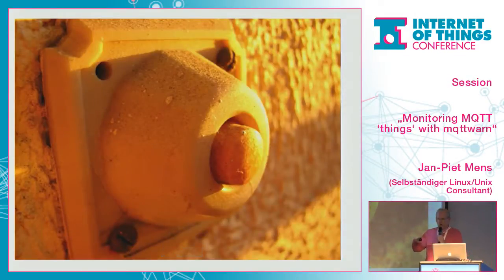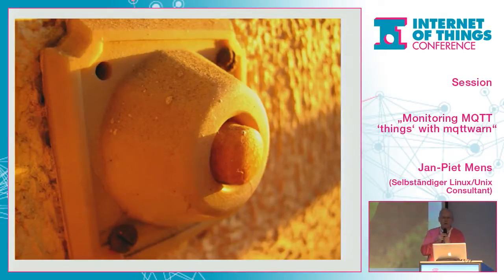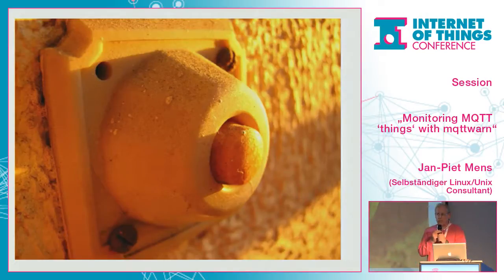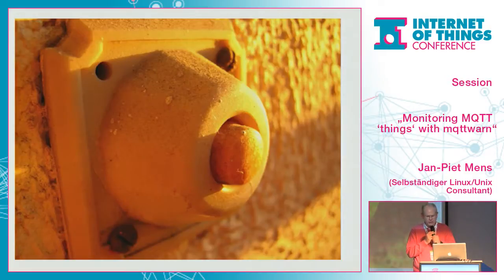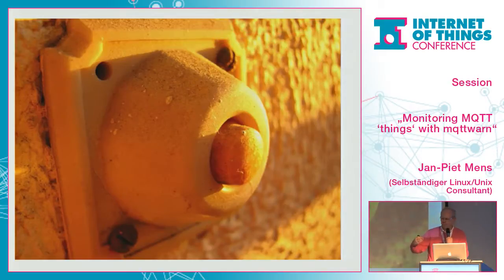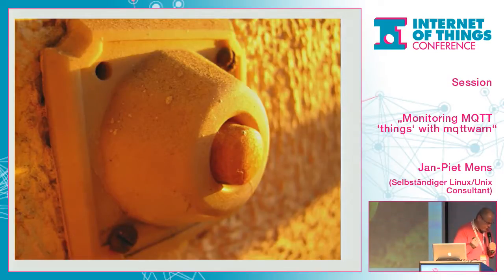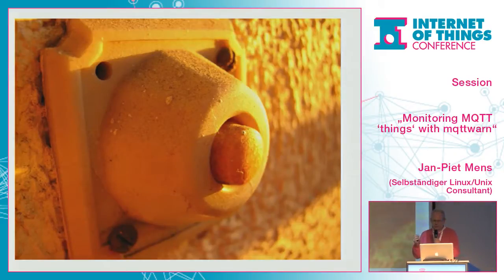Who was here during the OpenHab talk this morning by Thomas? OpenHab, for example, has one method of home automation or smart home implementation, and also has the possibility — it has bindings which implement send mail and Twitter and individual other bindings. And I very strongly believe that things like notification should be centralized.